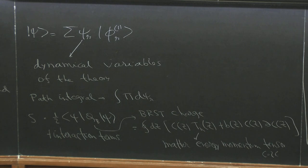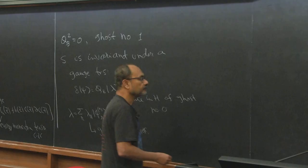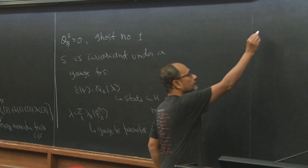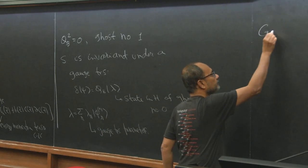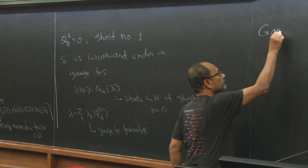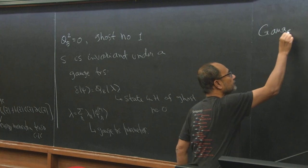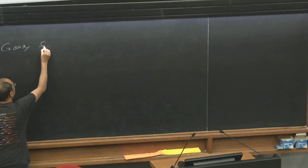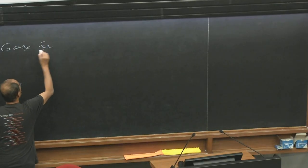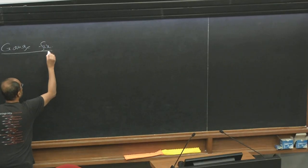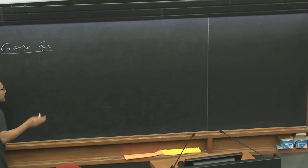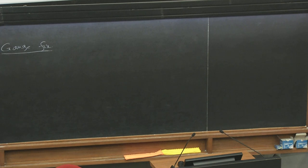Because of the property that Q_B squared equals 0, the action S is invariant under a gauge transformation of the form delta psi = Q_B lambda, where lambda is a state of ghost number 0 in H. We can expand lambda as sum_r lambda_r phi_{0r}, and these numbers are what we will usually call the gauge transformation parameters. The action is invariant simply because Q_B squared equals 0.